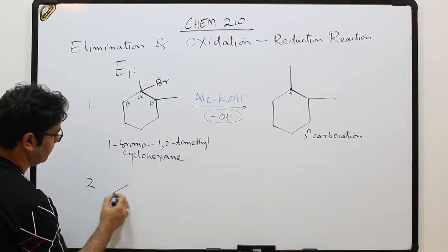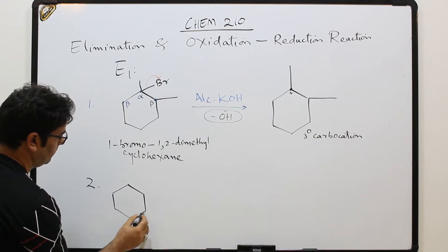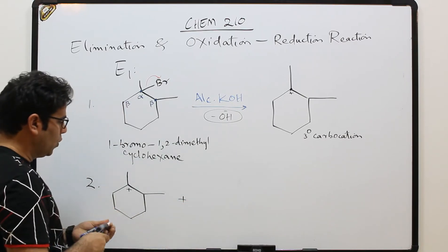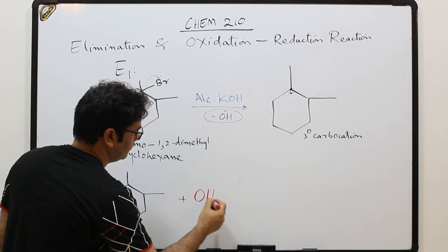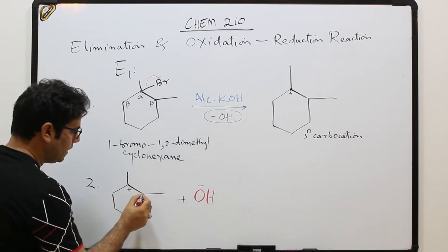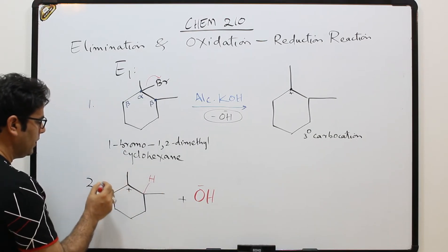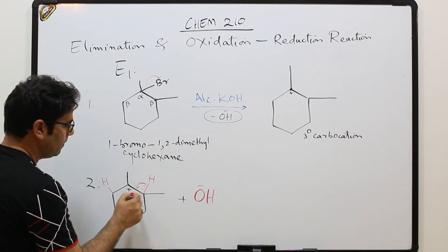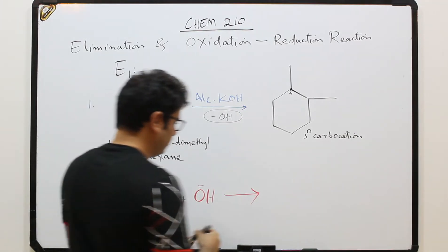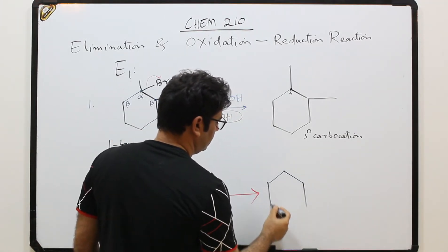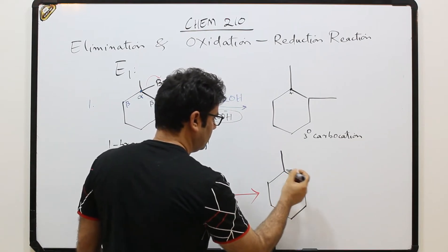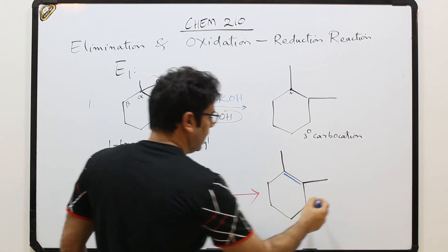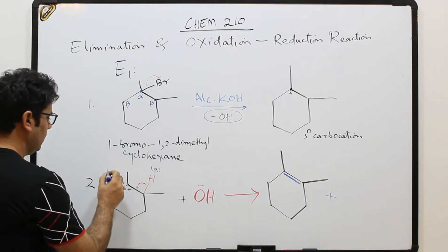In the second step, this tertiary carbocation in the presence of OH⁻ — there is a possibility of release of hydrogen either from one beta carbon or the other. If hydrogen is released from one side, the double bond comes there — we call this product A. If from the other beta carbon, the double bond forms there — this is product B.